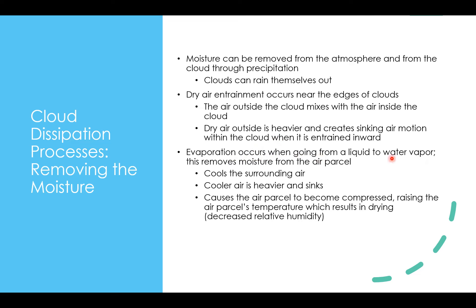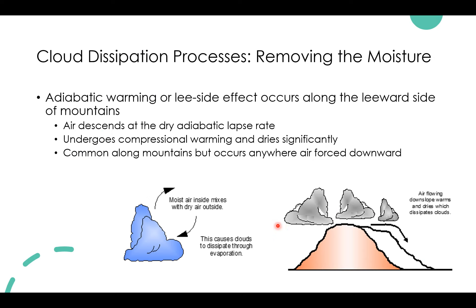Evaporation — going from a liquid to a water vapor — removes moisture from the air parcel and will also act to dissipate clouds. It cools surrounding air; cooler air is heavier and sinks. Anytime we get heavier air that's sinking, it causes the air parcel to become compressed, raising the parcel's temperature, resulting in a drying out of the parcel and decreasing relative humidity. Additionally, there's adiabatic warming or the lee side effect along mountains. Air descends at the dry adiabatic lapse rate, undergoes compressional warming, and dries significantly — common along mountains but occurs anywhere air is forced downward.